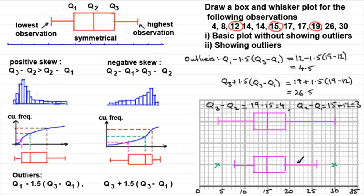Don't expect all box plots to have extreme values — sometimes you might have one or more outliers on one side and none on another; it depends on what your calculations come out to be. Also, don't always expect to plot outliers — it depends on the question. I hope that's given you some idea of how to draw box and whisker plots, and that brings us to the end of this tutorial.